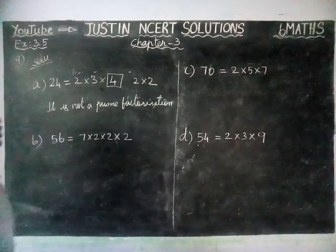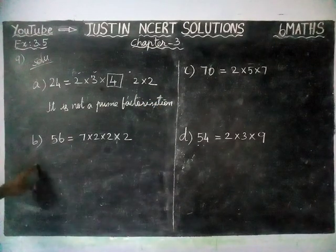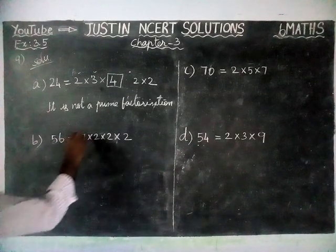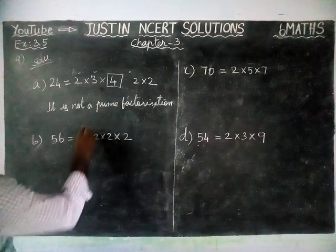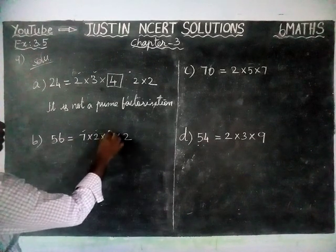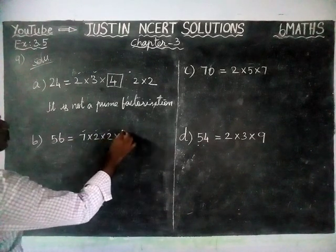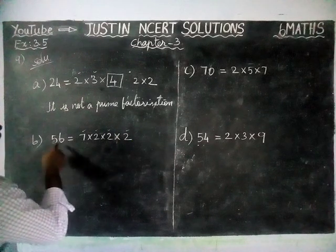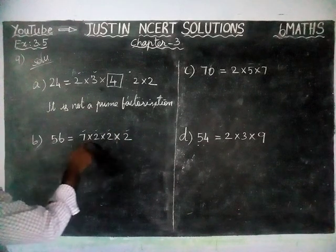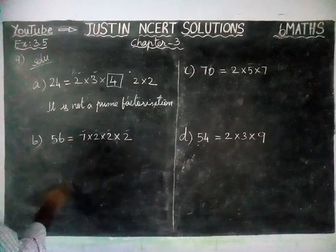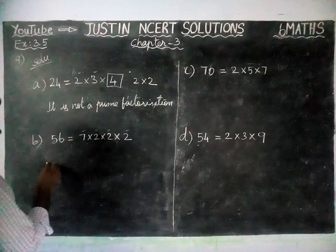Next, we are going to check Option B. Here, 7 is a prime number, 2 is a prime number, and 2 again. All its factors are prime numbers, therefore it is prime factorization.